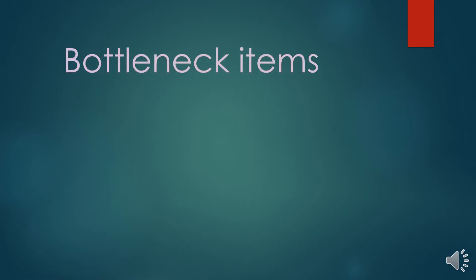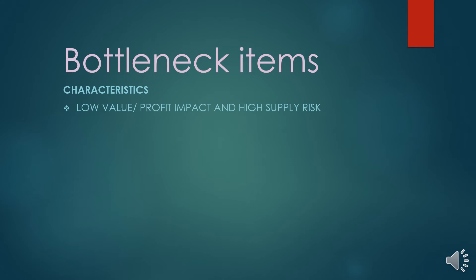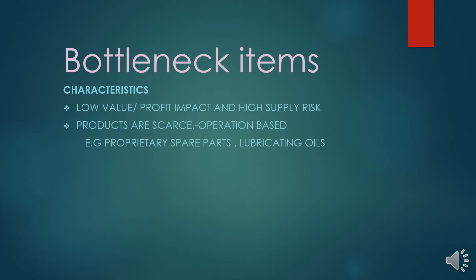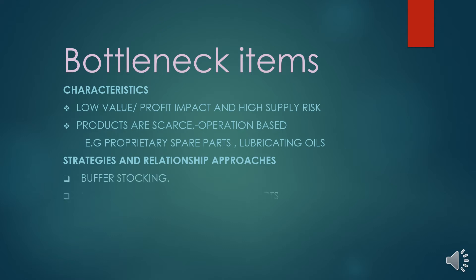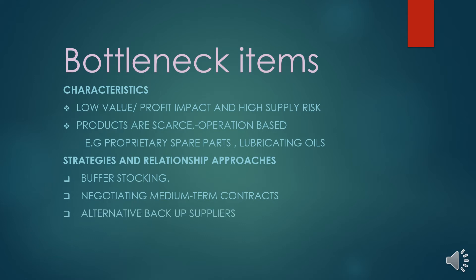The next category is the bottleneck items. These are products that have a high supply risk while having a minimum or low profit impact on the organization. They are operationally based — difficult to source, yet very useful in the operations of a company. For example, in our fruit juice company, proprietary spare parts and lubricating oils fall into this category.